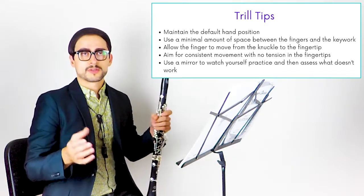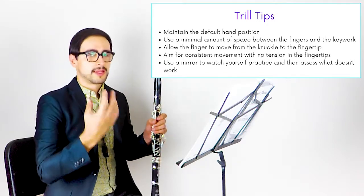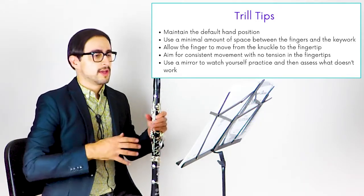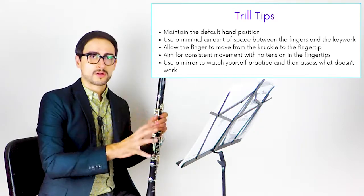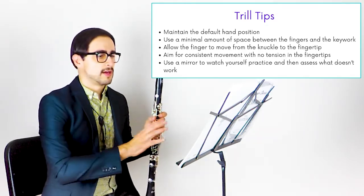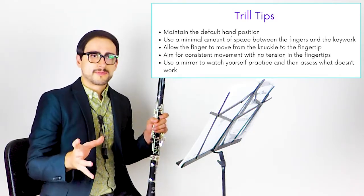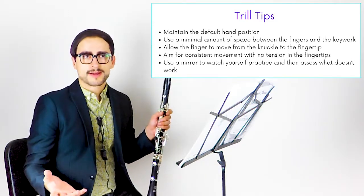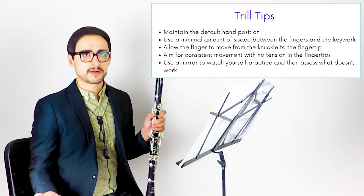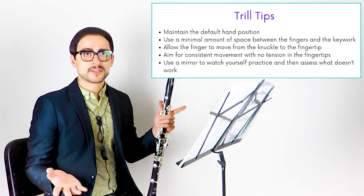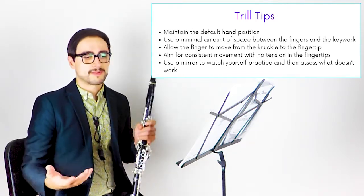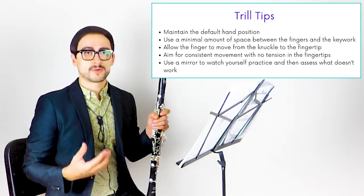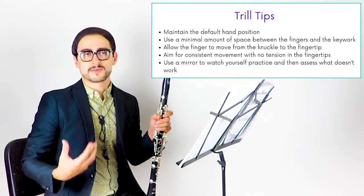Things to remember when trilling: trill from the knuckle to the fingertip, hand position is critical, use a mirror, even and consistent movements, good air. We're going for quality over quantity when practicing these. I never practice trills fast during warmups — if I play them fast, it's because I've taken them from a slow subdivision to a fast one. You can practice trills with arpeggios, major scales, whatever makes sense to you. Keep it interesting and challenge yourself with a variety of contexts, because trills in music aren't always going to be scalar or predictable.